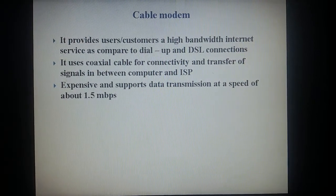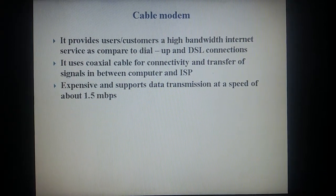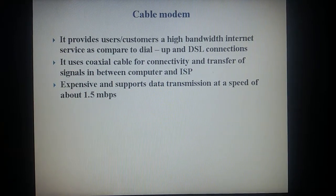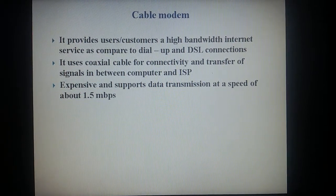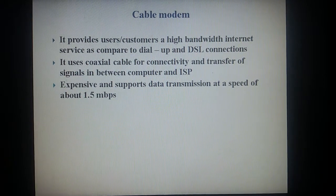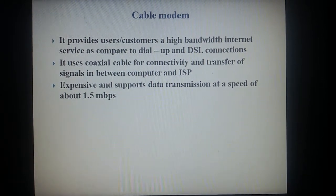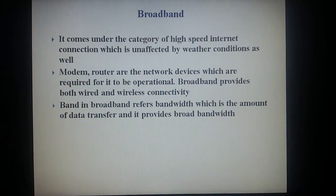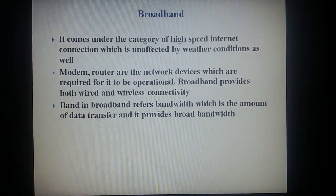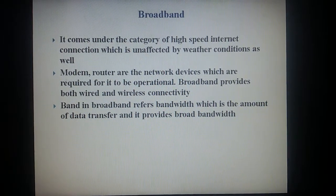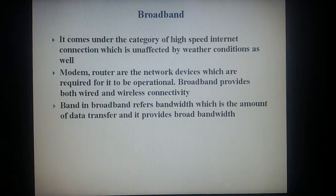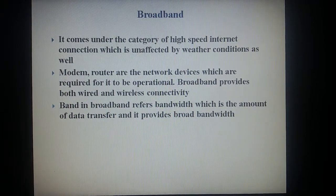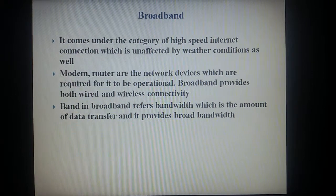Cable modem: it provides users a high-bandwidth internet service as compared to dial-up and DSL connections. It uses coaxial cable for connectivity and transfer of signals between the computer and ISP. Expensive and supports data transmission at a speed of about 1.5 Mbps. Broadband comes under the category of high-speed internet connection which is unaffected by weather conditions. Modern routers are the network devices required for it to be operational. Broadband provides both wired and wireless connectivity and refers to broad bandwidth — the amount of data transfer.